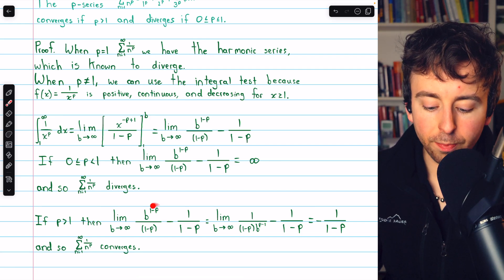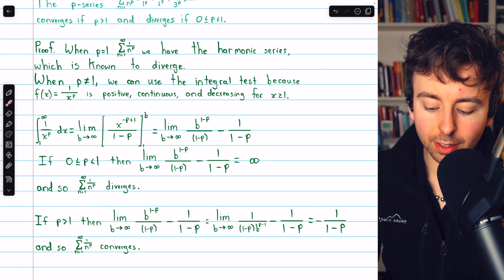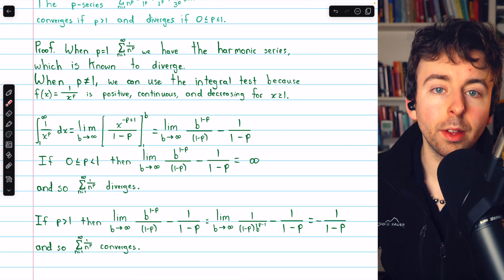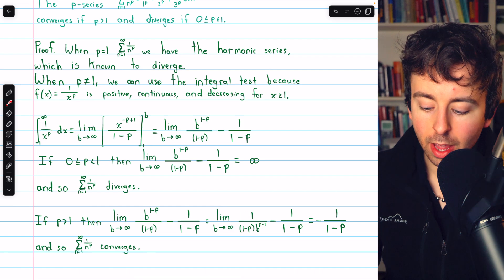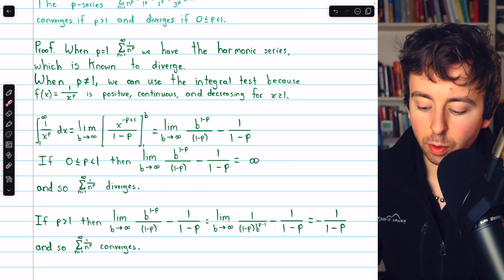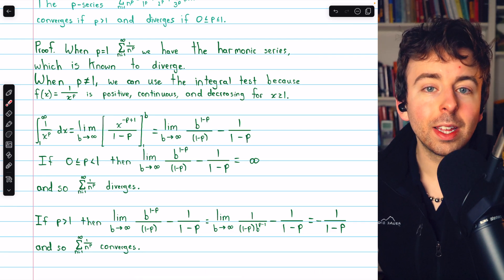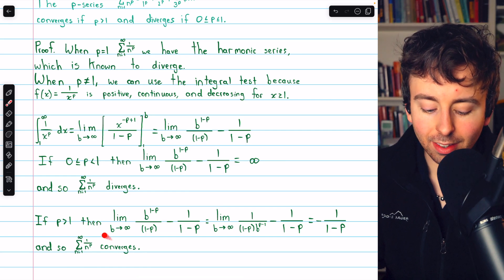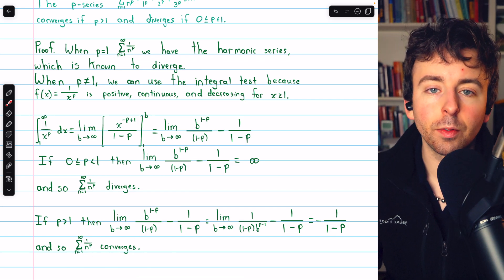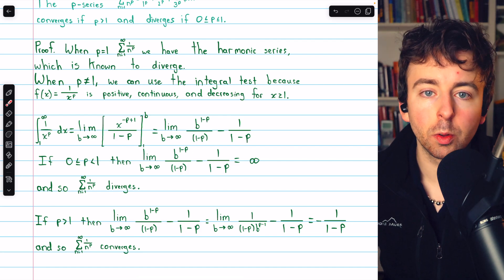Once more, the power of b being negative moves it to the denominator if we want to give it a positive power, and so the denominator would be going to infinity. So this goes to 0, and we're just left with negative 1 over 1 minus p, and so the integral converges when p is greater than 1, hence the corresponding p-series converges as well when p is greater than 1.